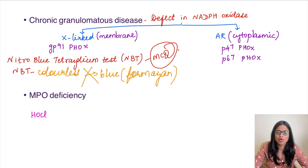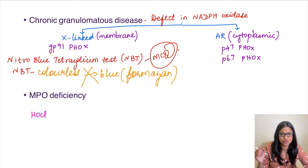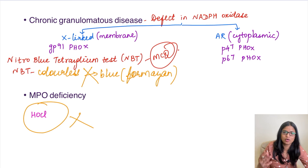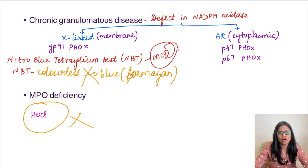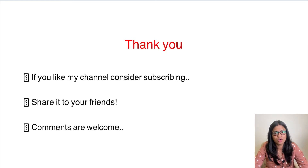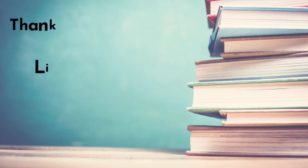The last defect is MPO deficiency. Myeloperoxidase is critical for the H₂O₂-MPO-halide system, producing HOCl — the most important bactericidal mechanism. When MPO is deficient, HOCl is not formed and phagocytic killing does not occur. All of these diseases result in recurrent infections. In the next class we'll cover the inflammatory mediators responsible for causing acute inflammation. Thanks for listening — if you like the content, please subscribe and share.